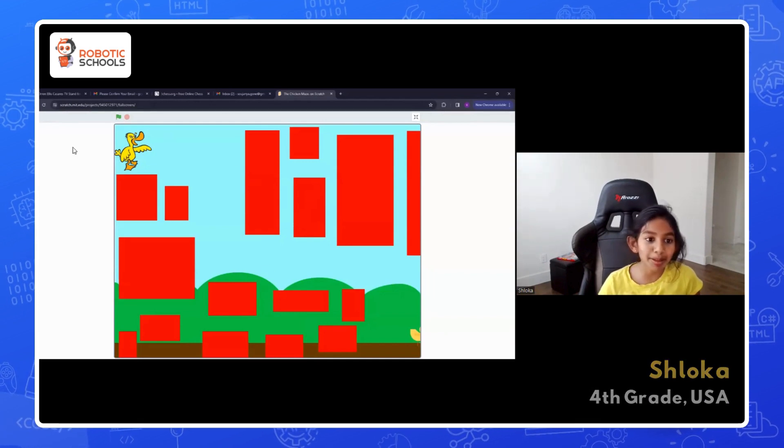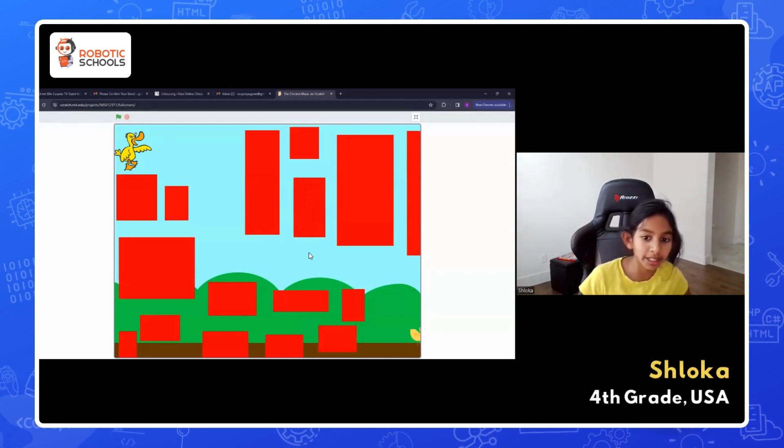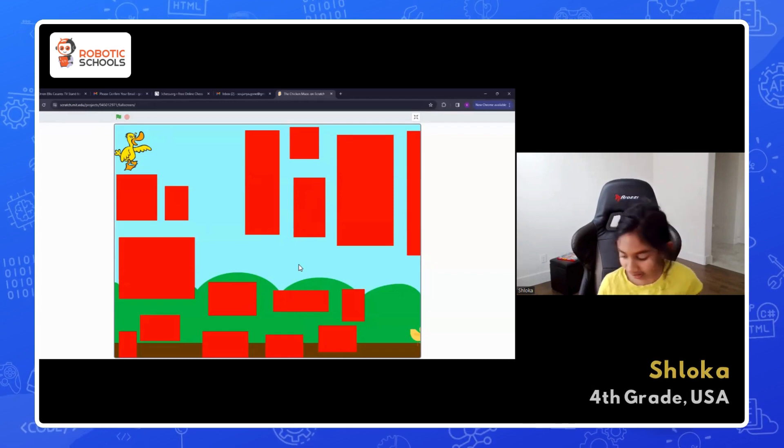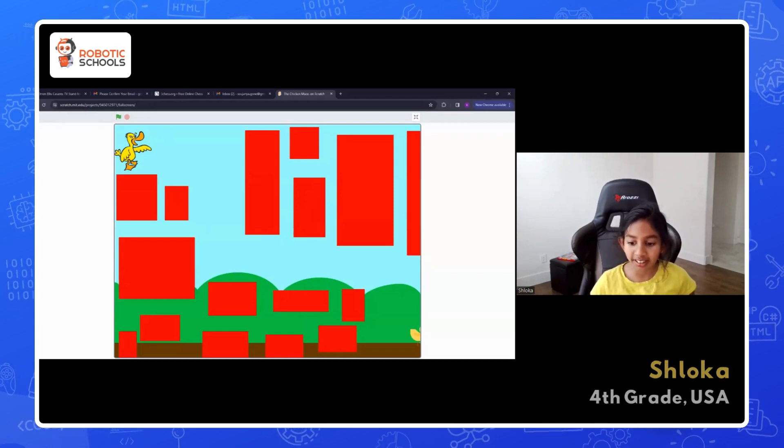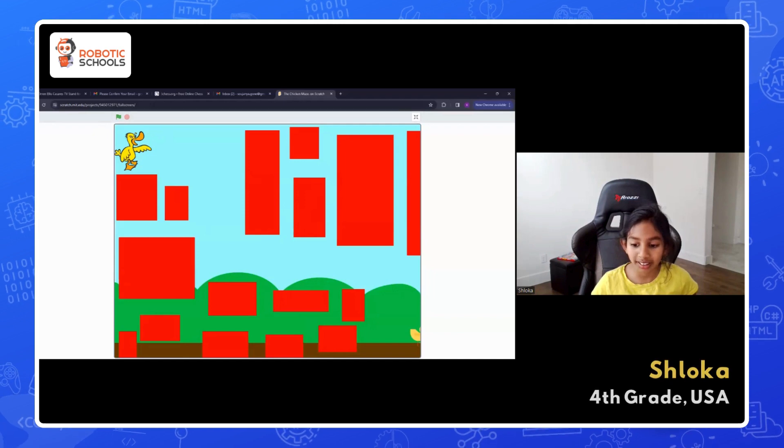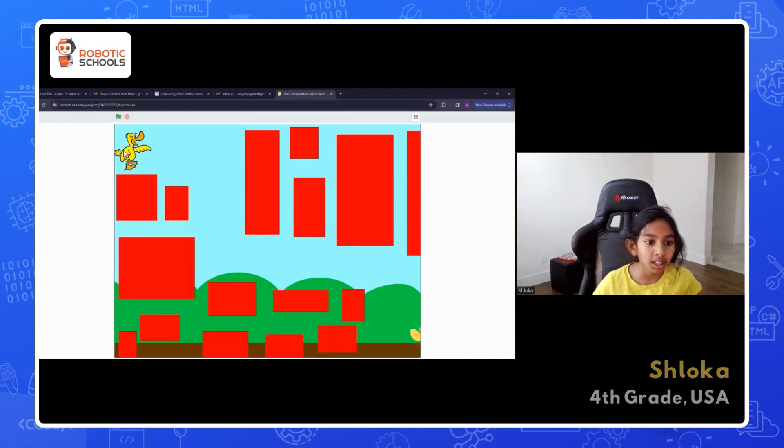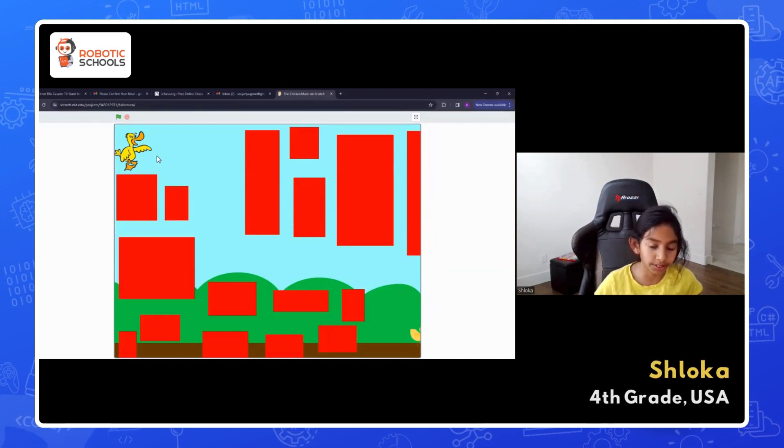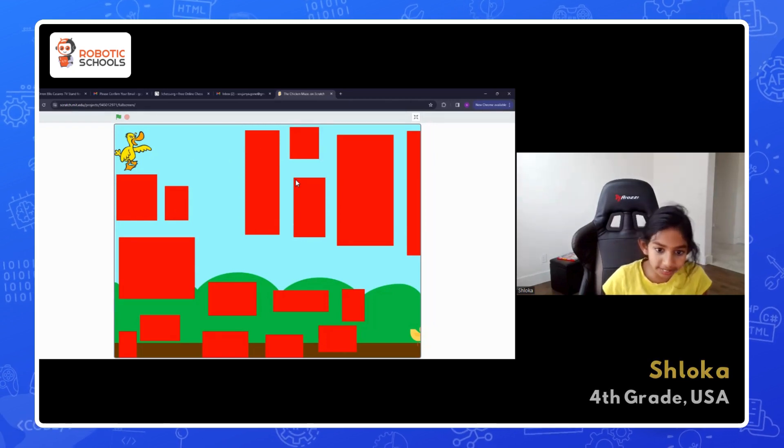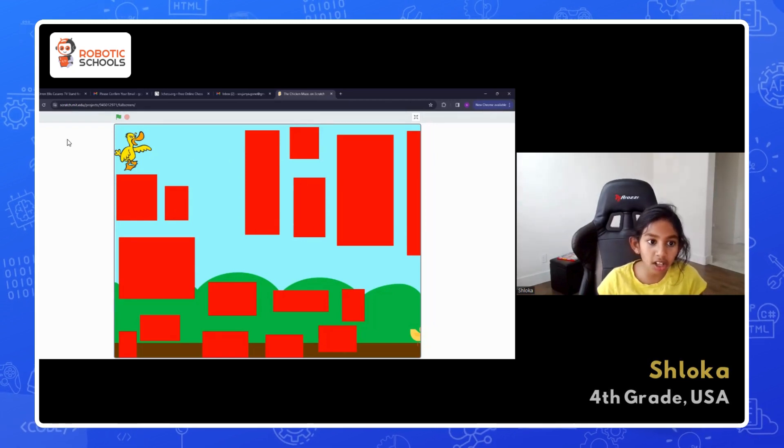I just made this new game in class and I wanted to show it. So basically you have to get this little chick, it's there, and you have to make it touch this duck over here. And there are three levels and you have to pass all of them.